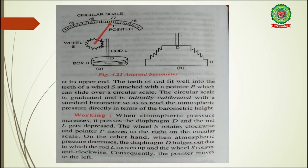Now let's read the working of the aneroid barometer again on page number 99. Working: When atmospheric pressure increases, it presses the diaphragm D and the rod L gets depressed. The wheel S rotates clockwise and pointer P moves to the right on the circular scale. On the other hand, when atmospheric pressure decreases, the diaphragm D bulges out, due to which the rod L moves up and the wheel S rotates anti-clockwise. Consequently, the pointer moves to the left, giving the reading of atmospheric pressure.